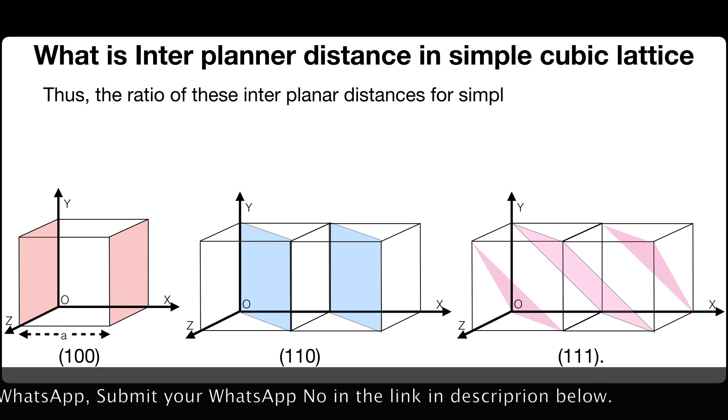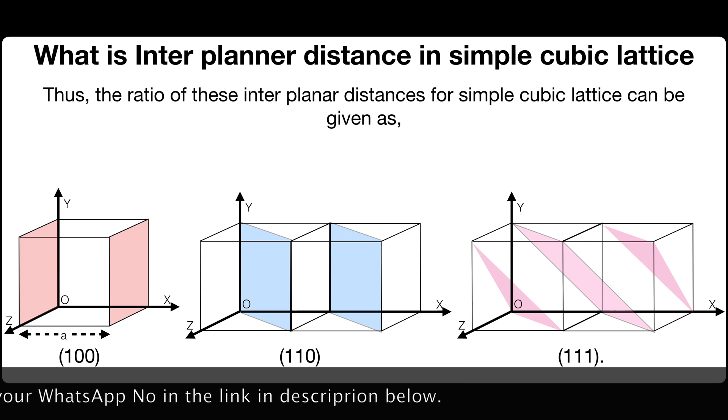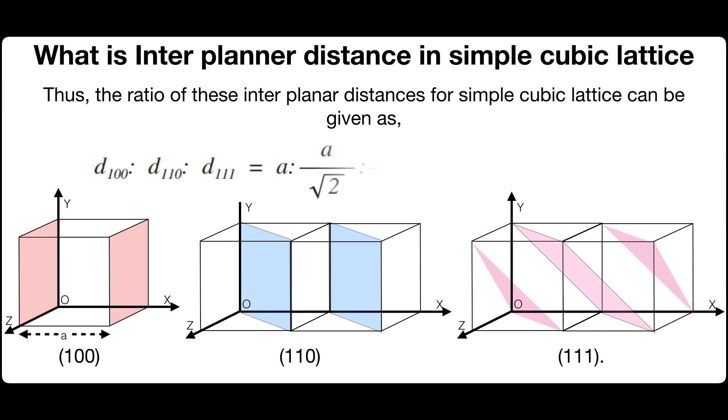Thus, the ratio of these interplanar distances for simple cubic lattice can be given as D100 to D110 to D111 is equals to A to A by square root of 2 to A by square root of 3 which is equals to 1 to 1 by square root of 2 to 1 by square root of 3.